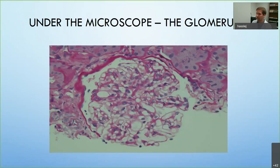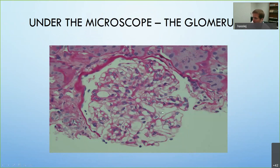When we talk about the normal glomerulus, we talk about delicate ribbon-like glomerular basement membranes forming capillary loops — there shouldn't be anything in there. The mesangium is what the loops wrap around, and we have Bowman's capsule and Bowman's space where the filtered fluid comes through and eventually becomes urine.